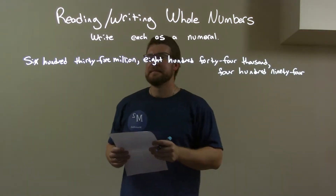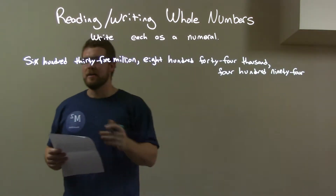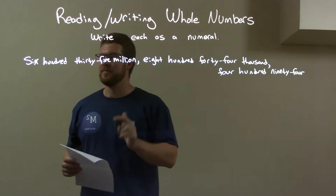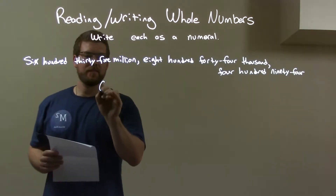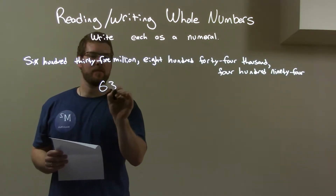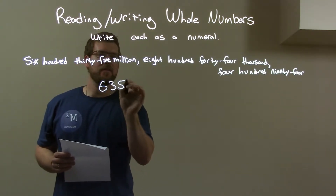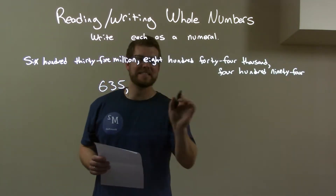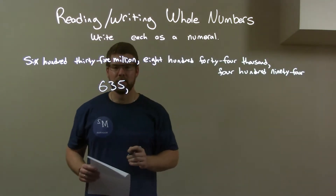Let's start with the six hundred thirty-five million. So, we have six hundred and thirty-five, but this is the millions place, so there are going to be six places afterwards.